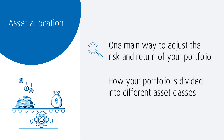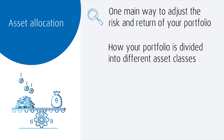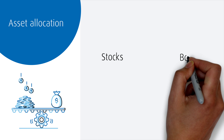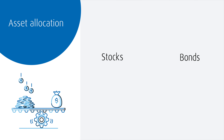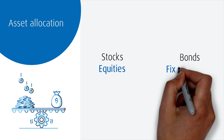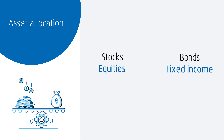For this introduction to asset allocation, we'll only take a look at two main asset classes to keep it simple: stocks and bonds, also known as equities and fixed income.